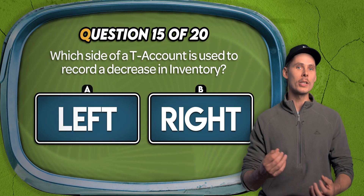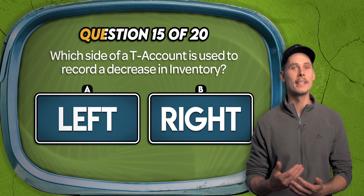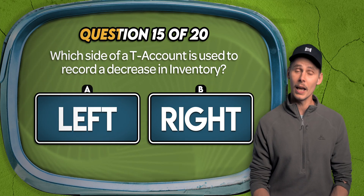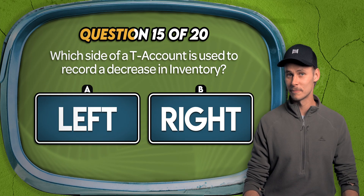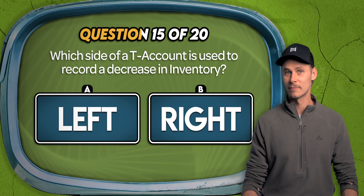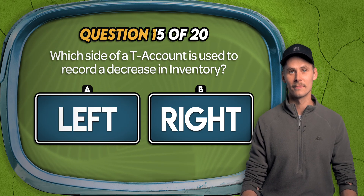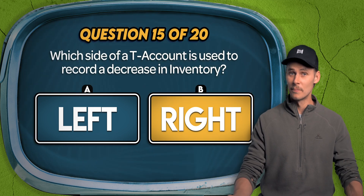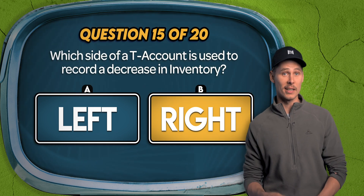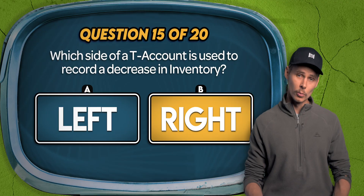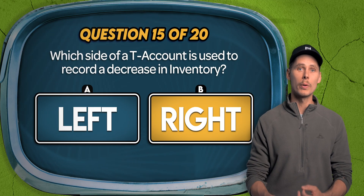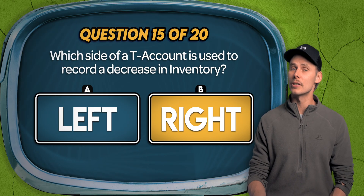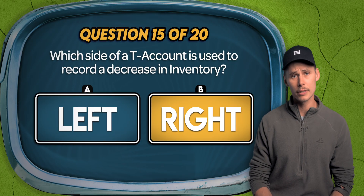Question 15. Which side of a T-account is used to record a decrease in inventory? The left or the right? It's B. Inventory is a type of asset, so it's a normal debit account. This means we'd credit inventory on the right side of the T-account to decrease it.